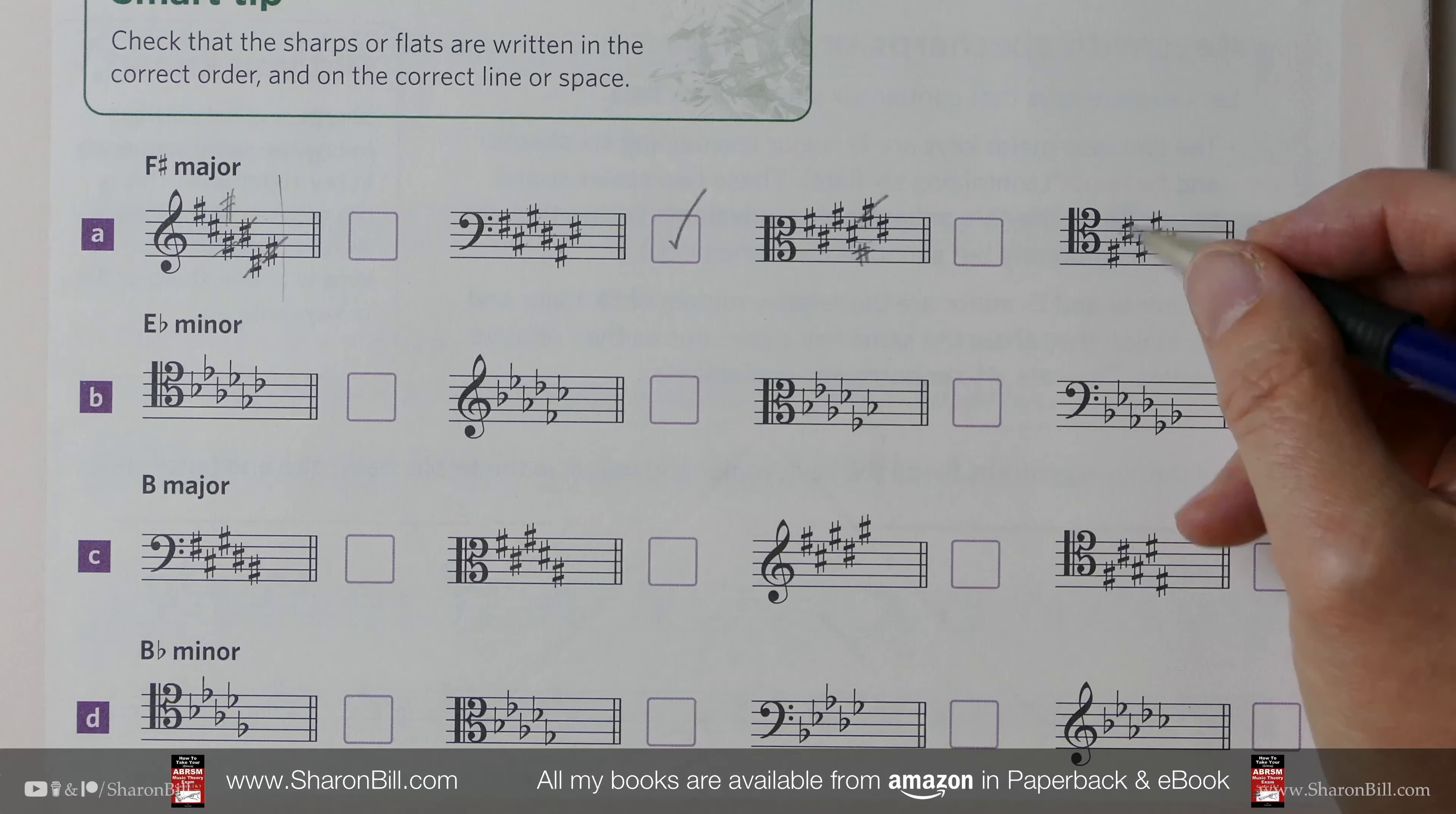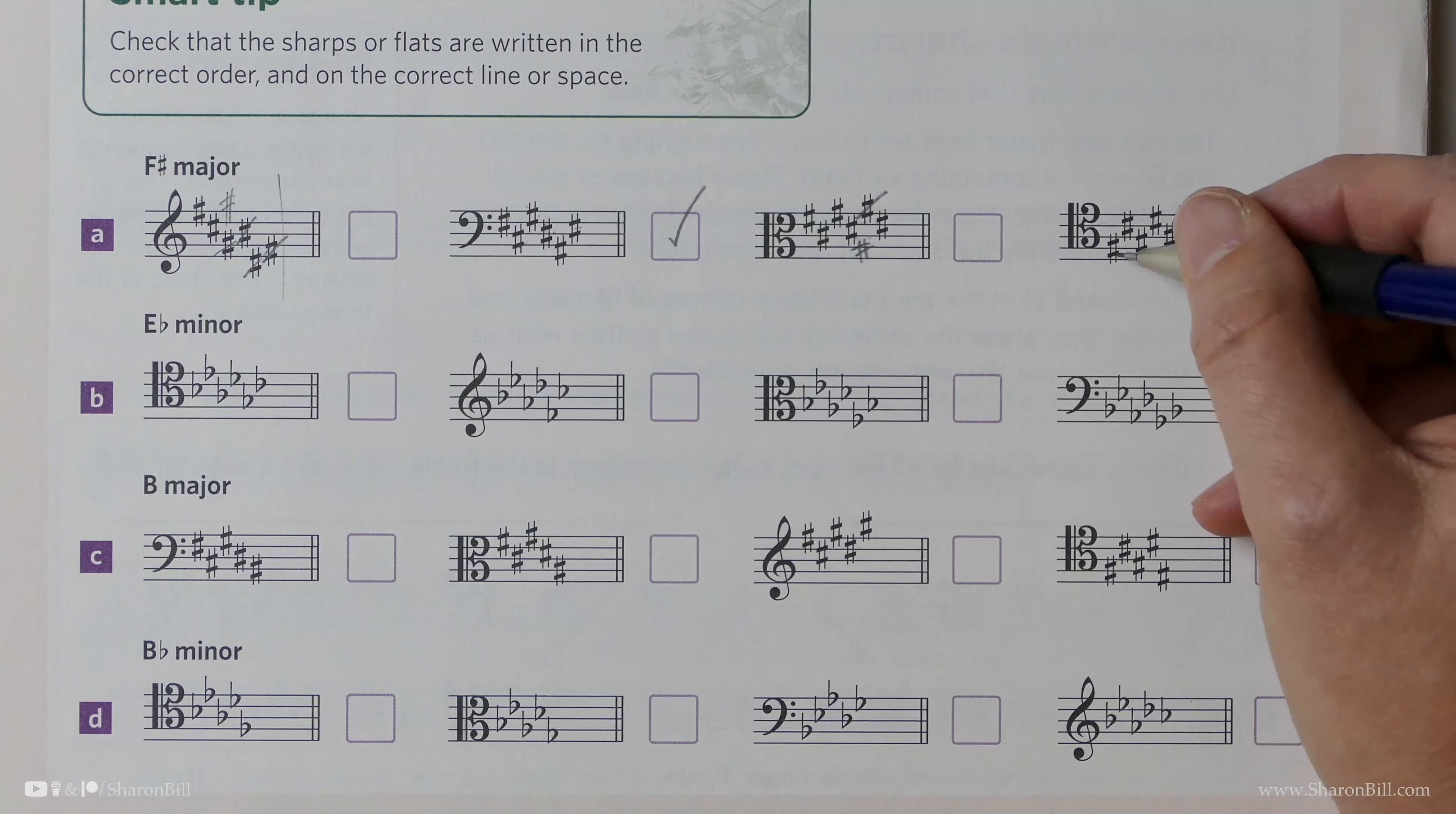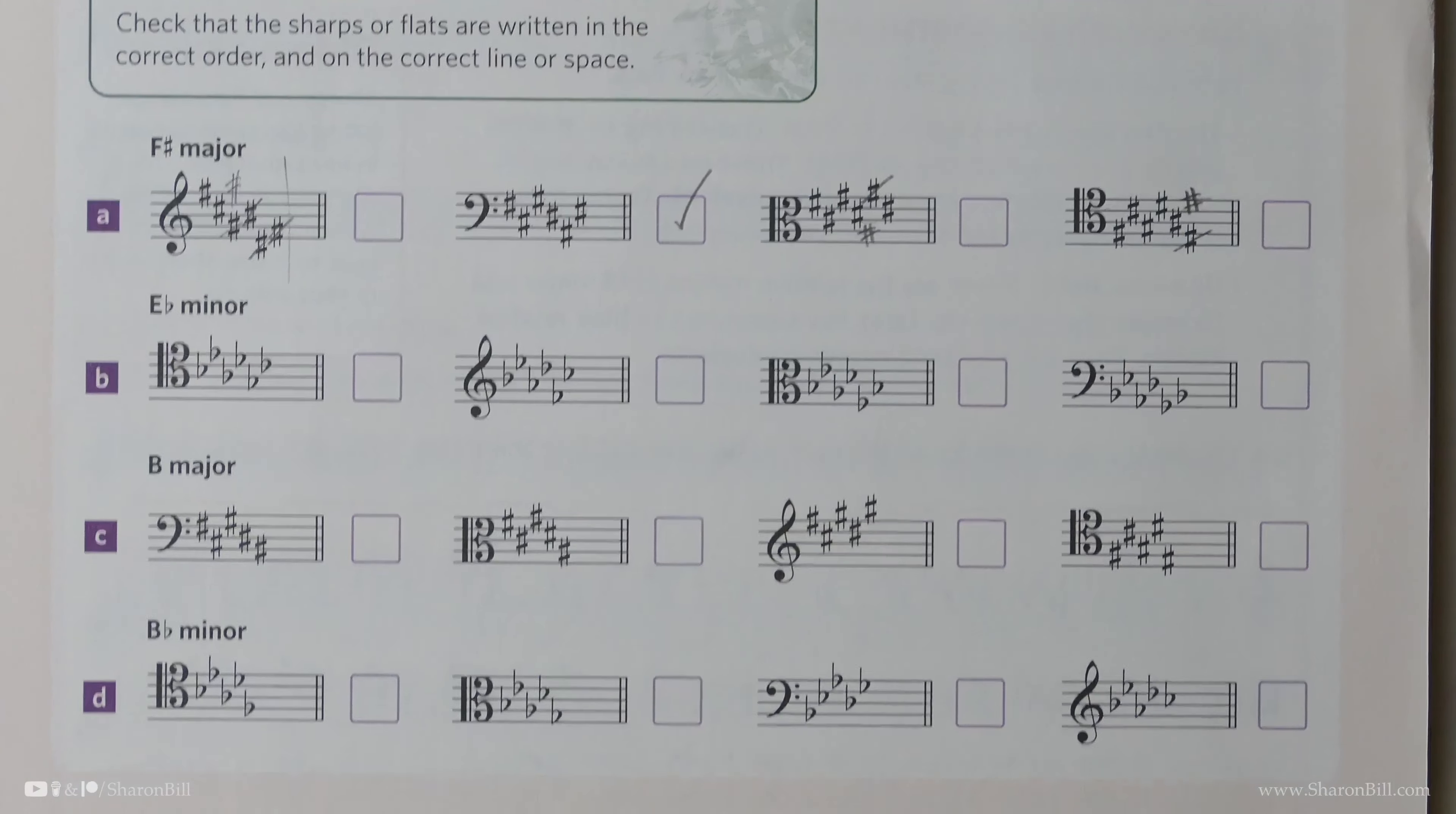And then here, the Tenor Clef. So, this is correct. However, this one, which should be C-D-E, that should be there. And so, that one is wrong. So, it just takes a little bit of practice getting your eye in, making sure, especially if you're not used to reading these clefs, so you've got to make sure they're in the right place, as well as the correct position on the stave. Let's press on to exercise B.